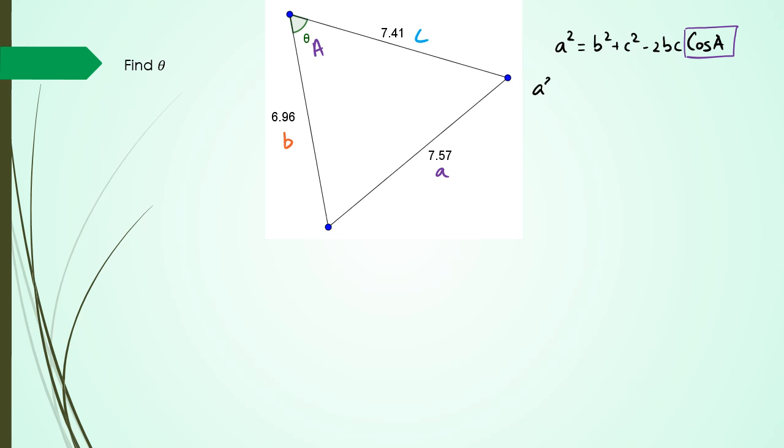So I can rearrange this as a² - b² - c² = -2bc cos A, and then I could write cos A as (a² - b² - c²) / (-2bc). That's the formula I'm going to be using.